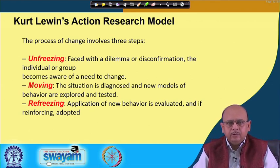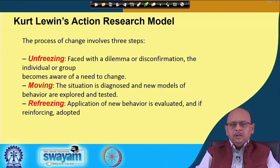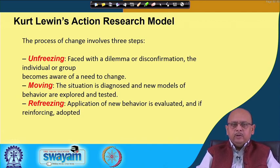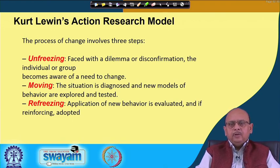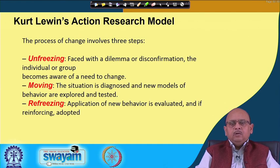The second phase is known as changing or moving. Once you are able to identify that it is important to go for this kind of change, this requires a new model of behavior. So you need to explore what technologies are available, identify one that would be suitable in your context, explore and test it, and then try to implement it. The changing or moving phase is where you go about bringing about a change in the technology. In the process, you also need to ensure that the diagnosis you have made is sound, the process for change is good, and the behavior of the people is also going to change so that there is less resistance. The maximum work is to be done at this stage because that is where you are going to implement the change.